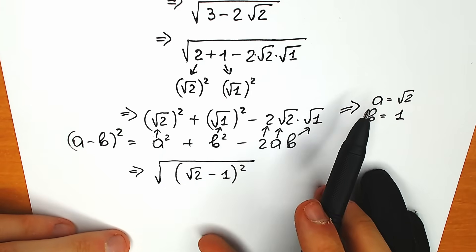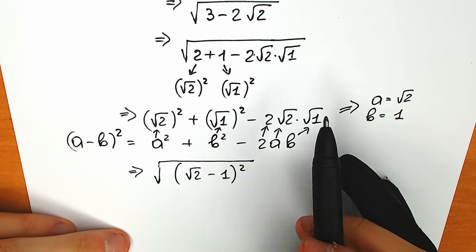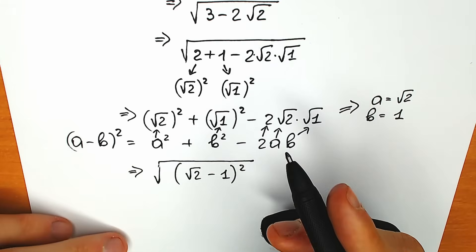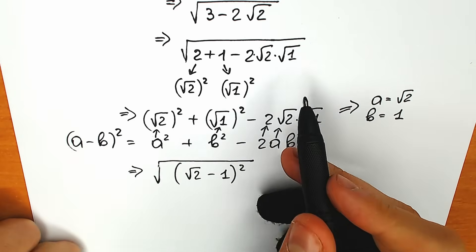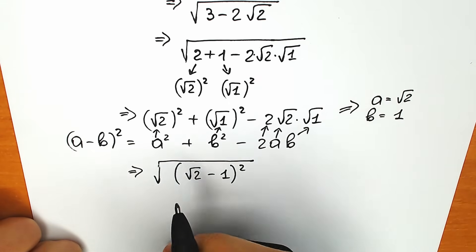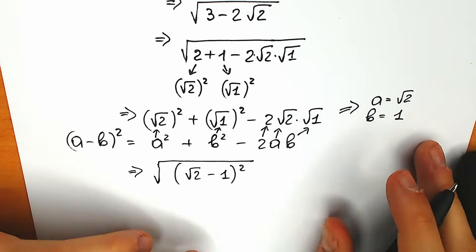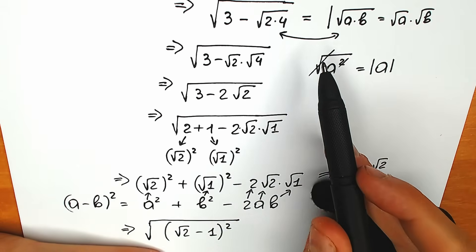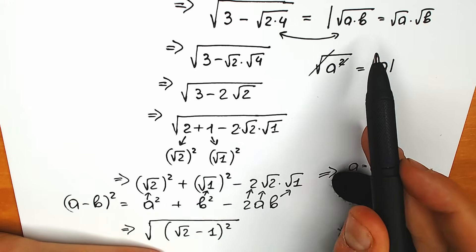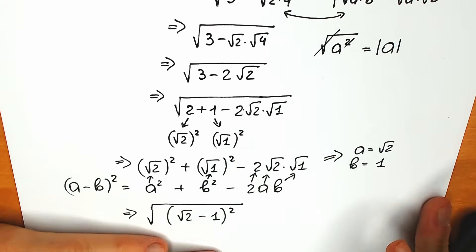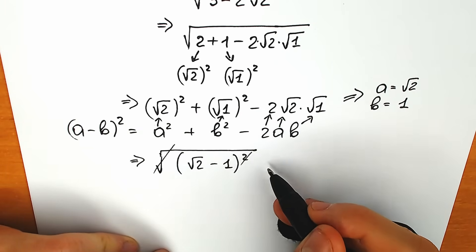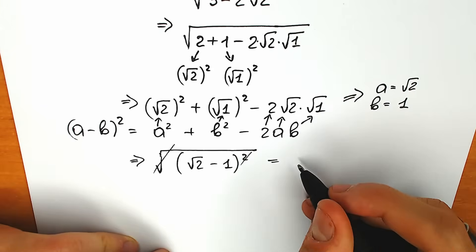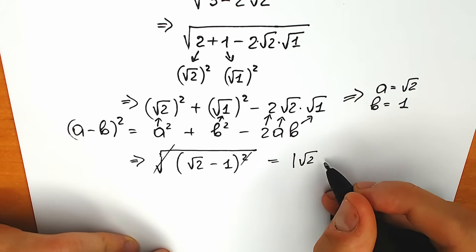I really hope you understand this part. Whenever you have an expression to the second power under a square root, you can cancel them. As a result, we have the absolute value of square root of 2 minus 1.